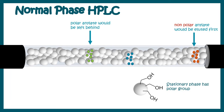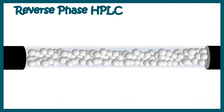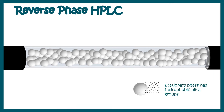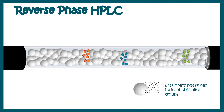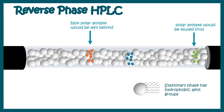The other mode is reverse phase HPLC. In reverse phase HPLC, the stationary phase has hydrophobic alkyl groups that form hydrophobic bonds with non-polar or hydrophobic analytes. When the sample is injected, hydrophobic or highly non-polar analytes are retained in the column with increased retention time, whereas polar substances are eluted first.